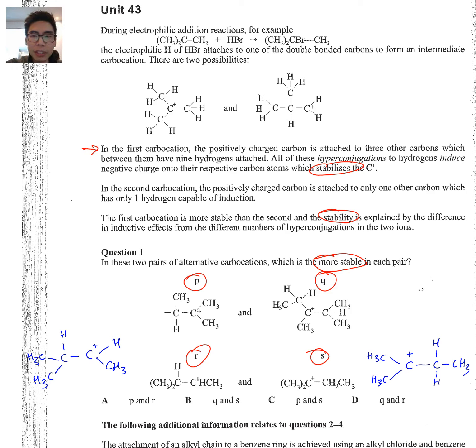Starting here, in the first carbocation, the positively charged carbon is attached to three other carbons, which between them have nine hydrogens attached. One, two, three, four, five, six, seven, eight, nine. All of these hyperconjugations to hydrogens induce negative charge onto the respective carbon atoms, which stabilizes the C+. That's the important thing. All of these bonds stabilize the carbocation.